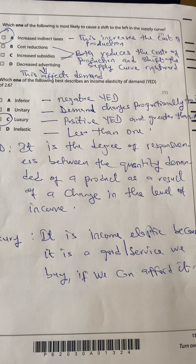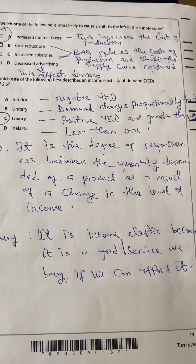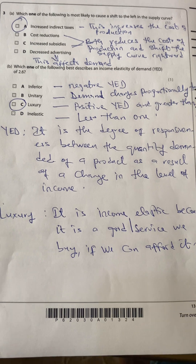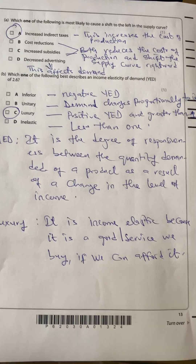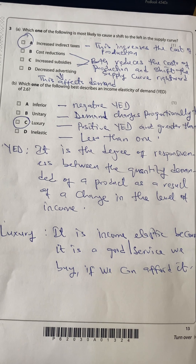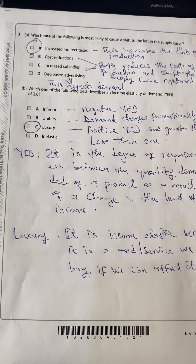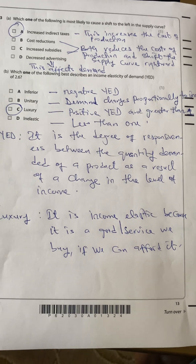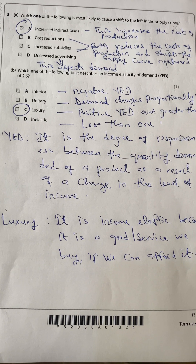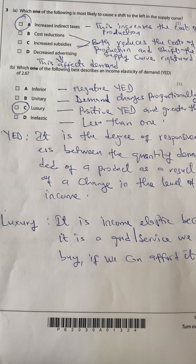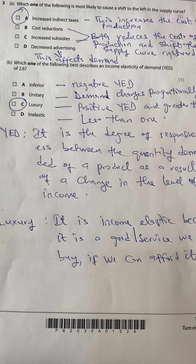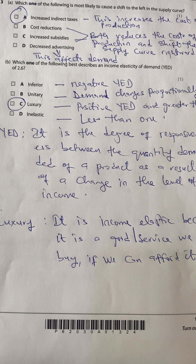Which one of the following best describes an income elasticity of demand of 2.6? Income elasticity of demand is the degree of responsiveness between the quantity demanded of a product as a result of a change in the level of income. Inferior goods have a negative YED, so it is not A.